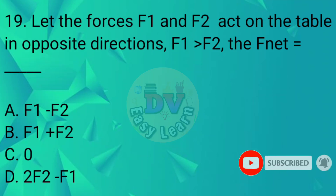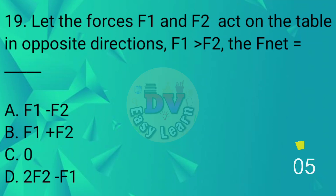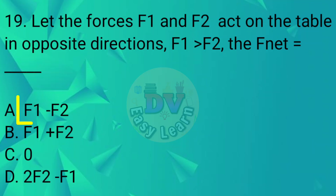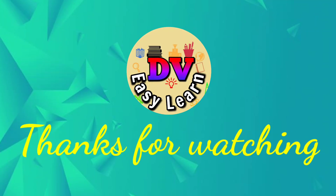Question No. 19: Let the forces F1 and F2 act on the table in opposite directions, and F1 is greater than F2. The net force is equal to — Correct answer: F1 minus F2. Thanks for watching this video.